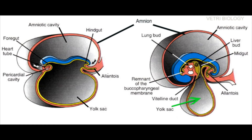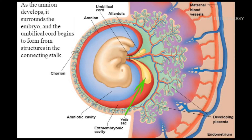The yolk sac is a small membranous structure situated outside the embryo. The yolk sac forms a part of the fetus gut — that is, the path of food digestion. It provides all the nutrients and produces blood cells until the placenta fully forms. Towards the end of the first trimester, that is the first three months, the yolk sac shrinks and gradually disappears.